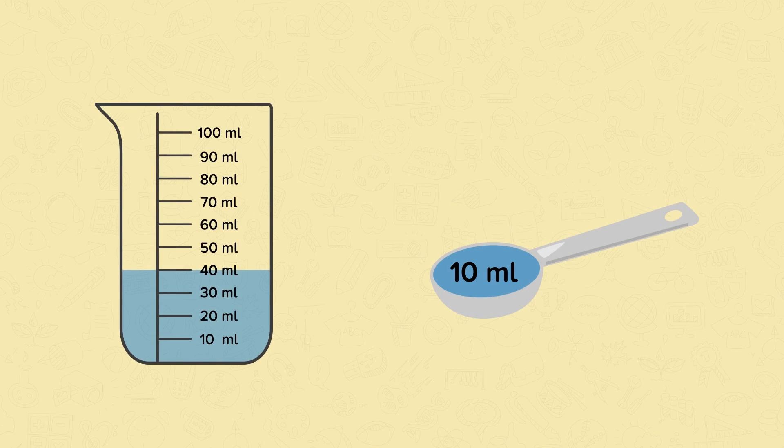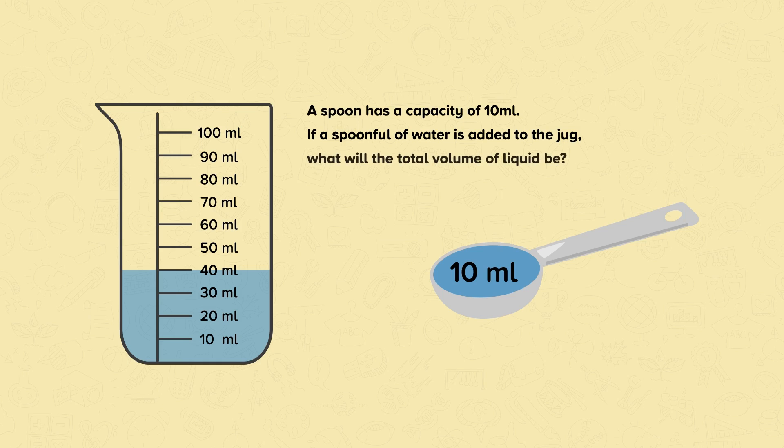Let's start with this problem. A spoon has a capacity of 10 milliliters. If a spoonful of water is added to the jug, what will the total volume of liquid be? There are some key words in this problem that help us to know that we must solve it using addition. These key words are added and total.